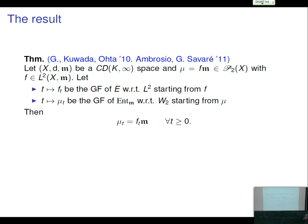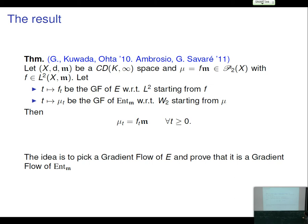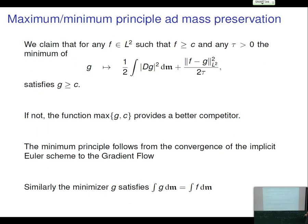This theorem was proved by myself, Gigli, and Savaré in the setting of Alexandrov spaces using analytic tools already present there, and then generalized to CD(K,∞) together with Ambrosio and Savaré. The idea is: take a gradient flow of the Dirichlet energy, check that multiplying by m yields a gradient flow of the entropy, then use uniqueness of the gradient flow of the entropy. Slides with further details will be available on the conference website.